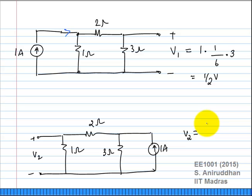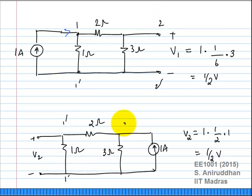What is V2? The 1-ampere current enters and splits equally between two branches — half an ampere times 1 ohm gives half a volt. Does this seem weird? I took a resistive network, put a current source between two terminals, and looked at the voltage across two different terminals. The voltage V2 obtained by exciting at terminals 2 and 2-prime equals the voltage V1 obtained by exciting at terminals 1 and 1-prime — they are the same.